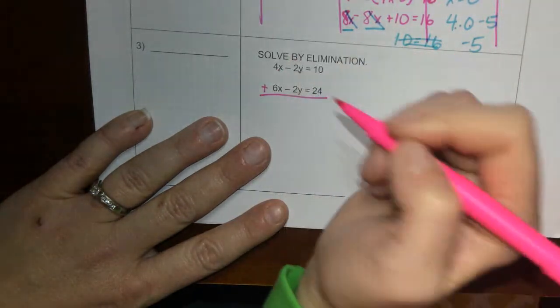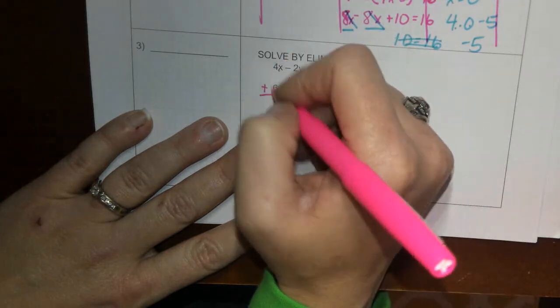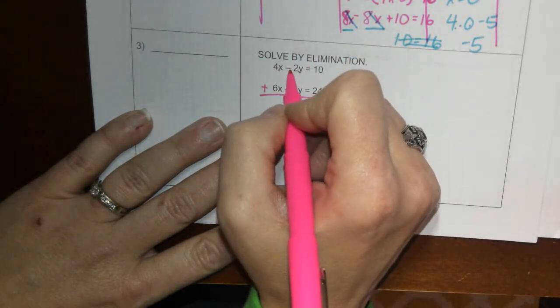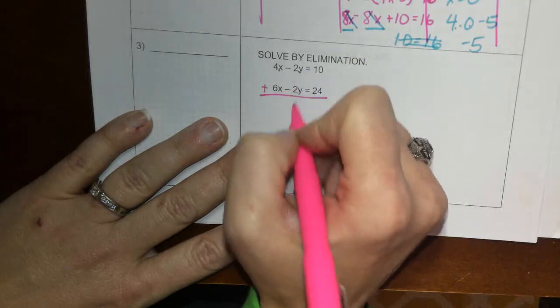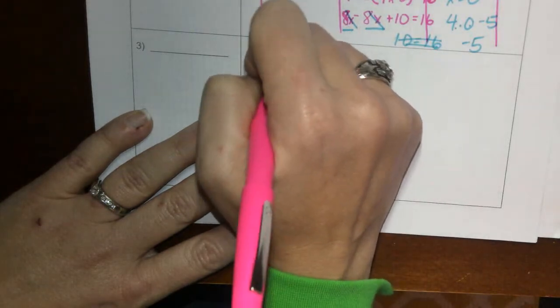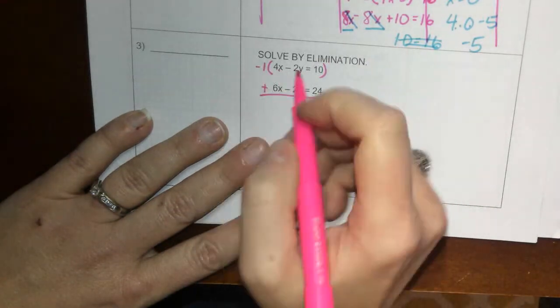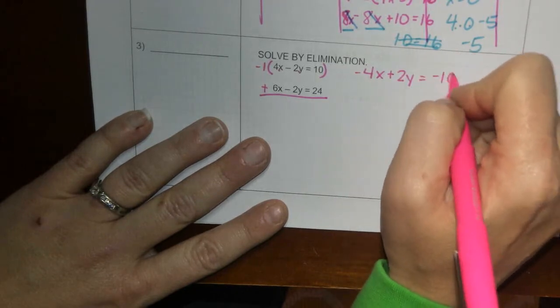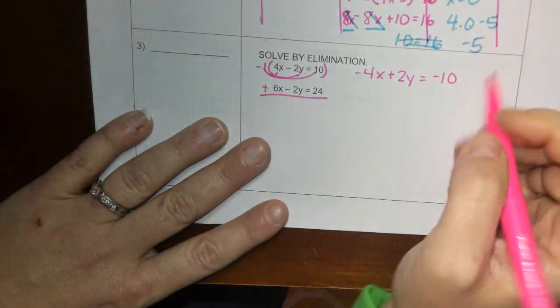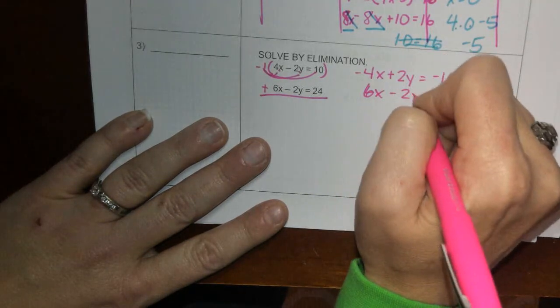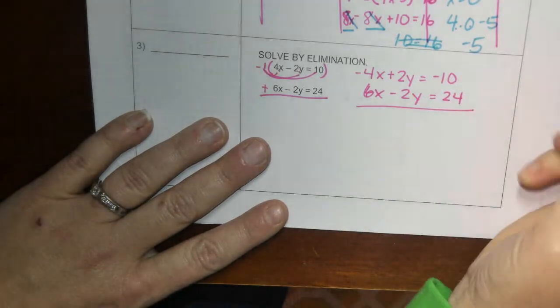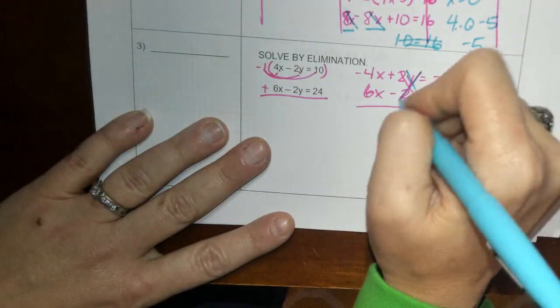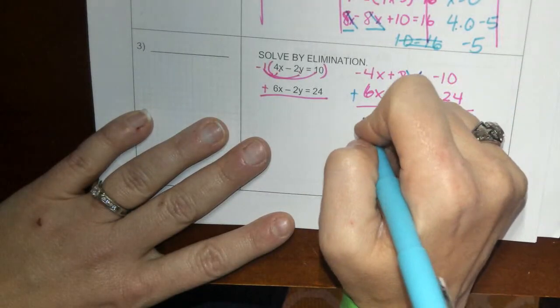But what we can do is we can multiply one of them by a negative 1, and that's going to make one of it a positive 2y, so those y's will cancel. So let's do that, negative 1 times 4x is negative 4x plus 2y equals negative 10. I just multiplied this times everything. Then we have 6x minus 2y equals 24.